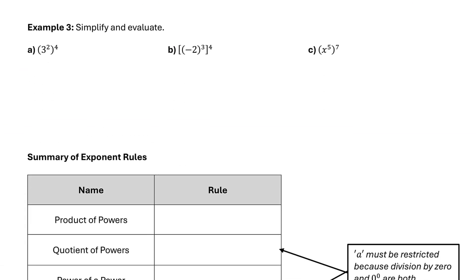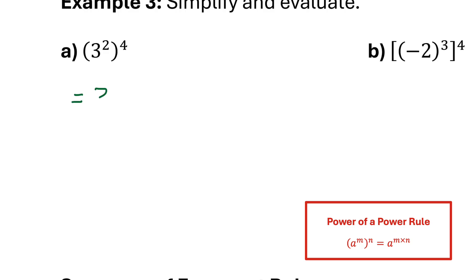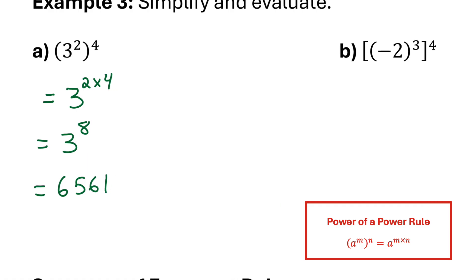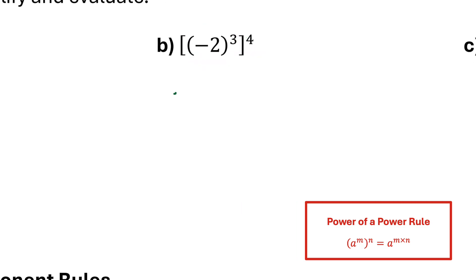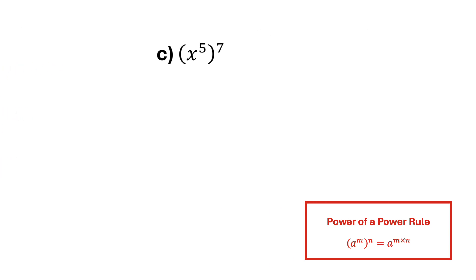Let's use that rule in example 3. Part a: I have 3 squared to the power of 4. I keep that base of 3 and multiply the exponents, 2 times 4, making this equal to 3 to the power of 8, which is 6,561. Part b: I have a power of a power with base negative 2. I keep that base and multiply the exponents, 3 times 4, giving negative 2 to the power of 12, which equals 4,096. Part c: I have a power of a power with base x. I keep that base and multiply the exponents, 5 times 7, giving x to the power of 35. I can't evaluate that because x is unknown.